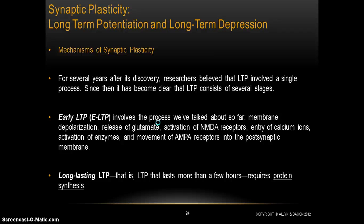Before we get to that, let's mention one thing. This is a fairly recent discovery: for a long time, people really thought that long-term potentiation was just a single process — really everything we've described up to this point, involving the role of NMDA receptors, AMPA receptors, the entry of calcium into the cell, and the movement of AMPA receptors into the synapse. In recent years, it's been discovered that that's not the whole story. There are really two different types, or at least two different stages, of long-term potentiation.